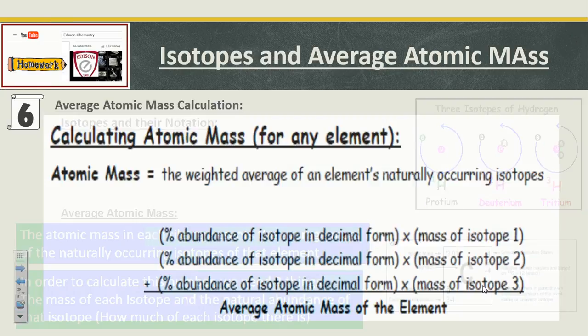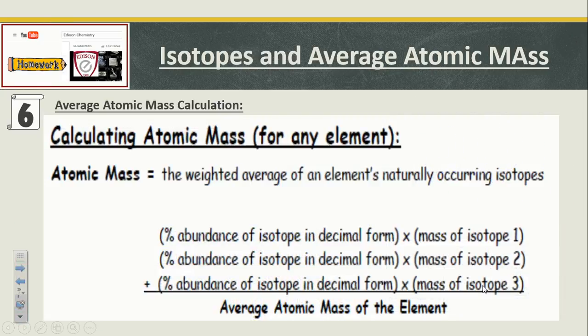To calculate the average atomic mass for any element, we have to weight the average of the element's naturally occurring isotopes. We take the percent abundance of a particular isotope in decimal form, and then we multiply it by that particular isotope's mass. Then we add it to the next percentage times its particular mass, and so forth, until we have covered all of the isotopes and the percent abundances. And we add them all up.